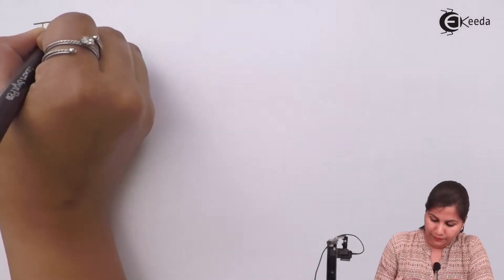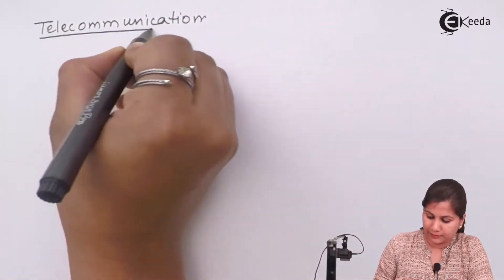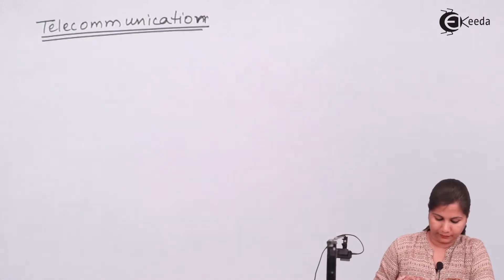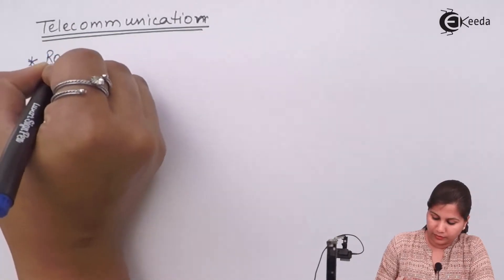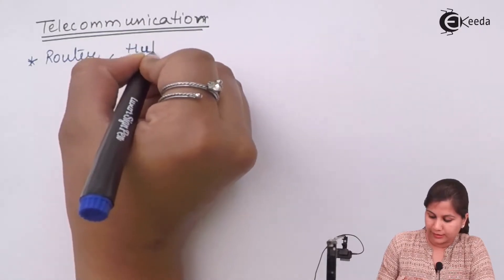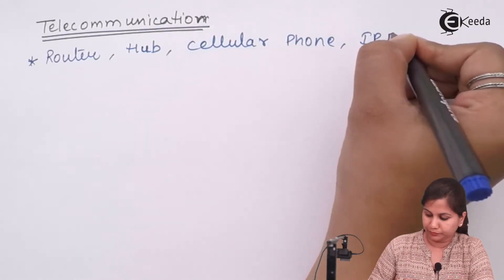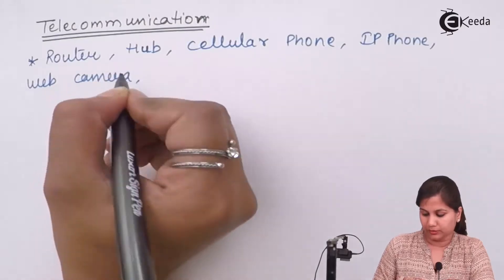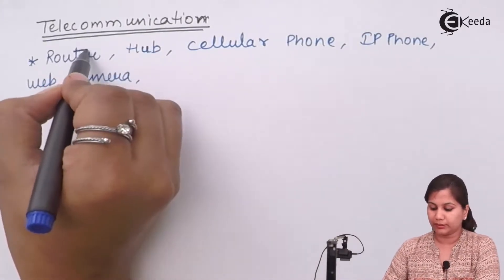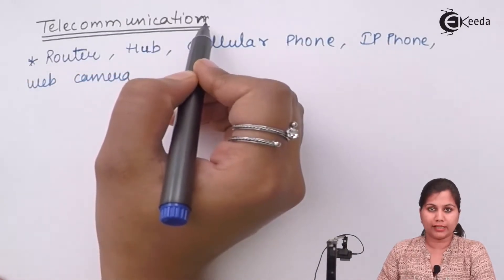In the field of telecommunication, there are also various examples of embedded systems, like the router, hub, cellular phone, IP phone, and web camera. These are examples of embedded systems in the telecommunication area.